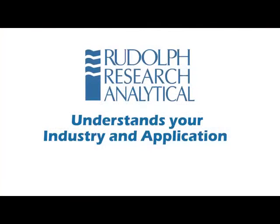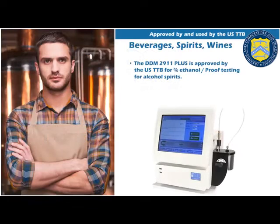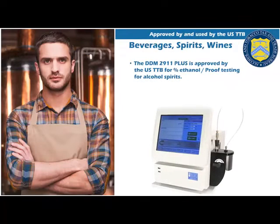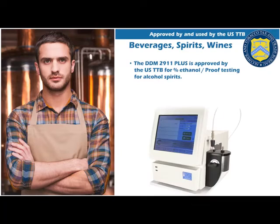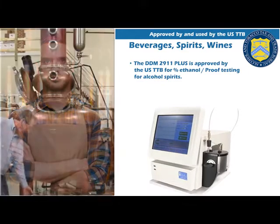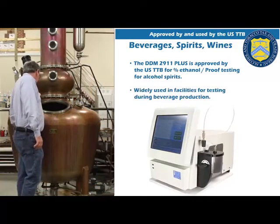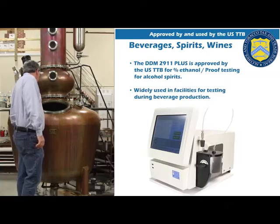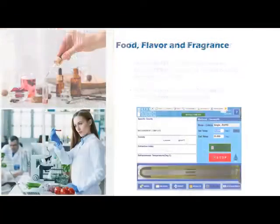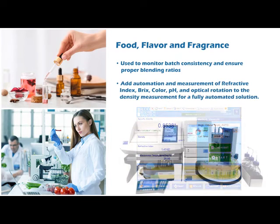Rudolph understands your industry and application. The DDM 2911 Plus is approved by the U.S. TTB for percent ethanol proof testing for alcohol spirits. It is widely used in facilities for testing during beverage production, used to monitor batch consistency and ensure proper blending ratios.